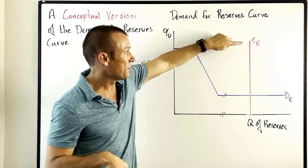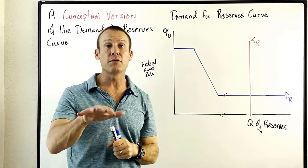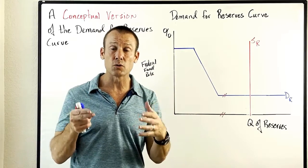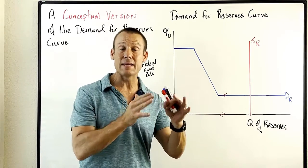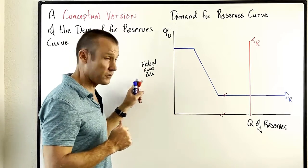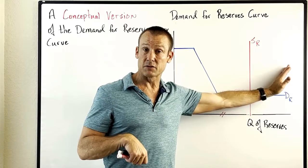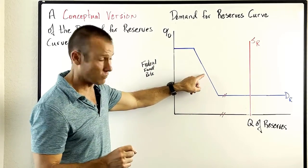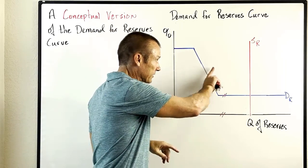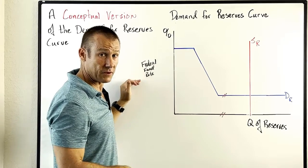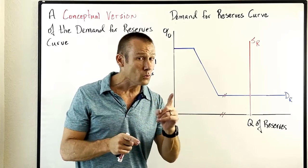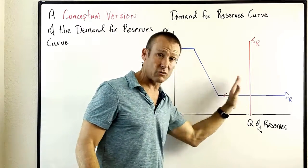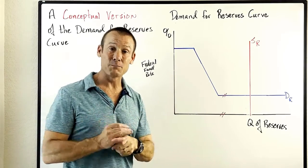Because of that, the supply of reserves curve is not important at all. How would the Fed change the supply of reserves? They would do so through open market operations — that used to be the number one policy tool of the Fed to change the federal funds rate. They would do open market purchases to increase reserve balances, or open market sales to decrease the supply of reserves. Under a limited reserve policy framework, shifting that supply curve had a big effect on the federal funds rate. But under an ample reserve framework, shifting this curve left and right doesn't do anything to the federal funds rate, so it's not an important curve anymore.